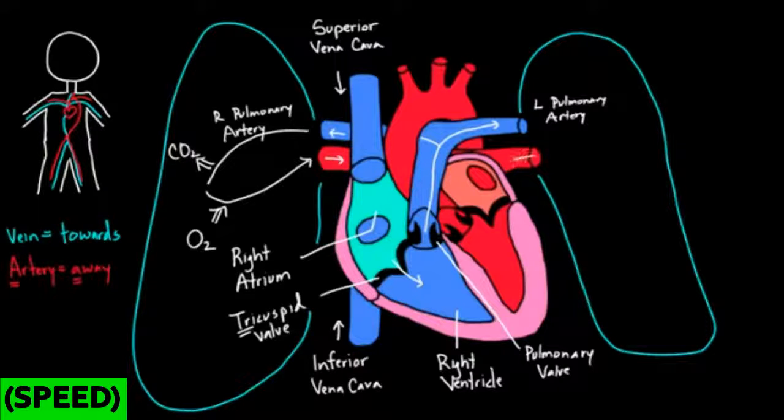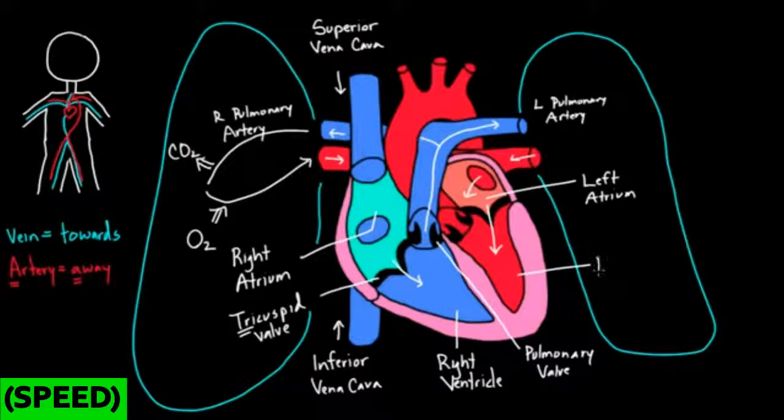Now blood comes back in this way and this way and dumps into this chamber. This is our left atrium. Just like our right atrium, we have one on the left. It goes down into, and you can probably guess what this one is called, it's our left ventricle.